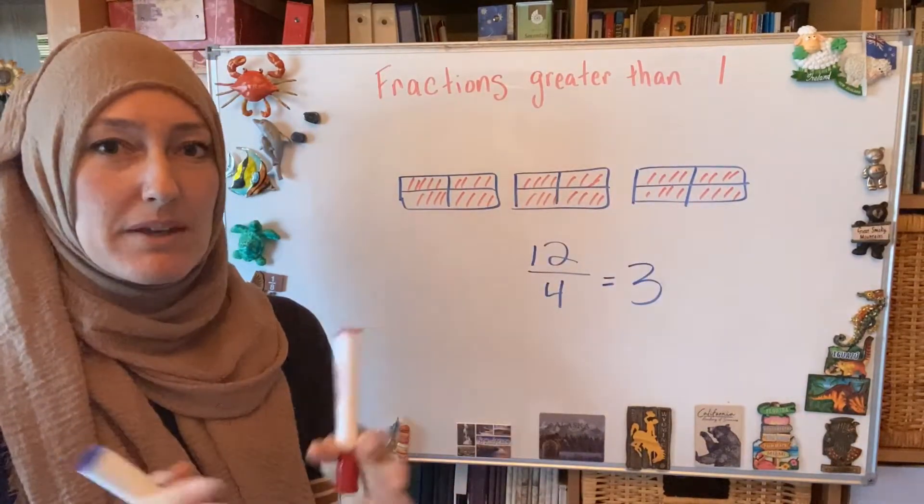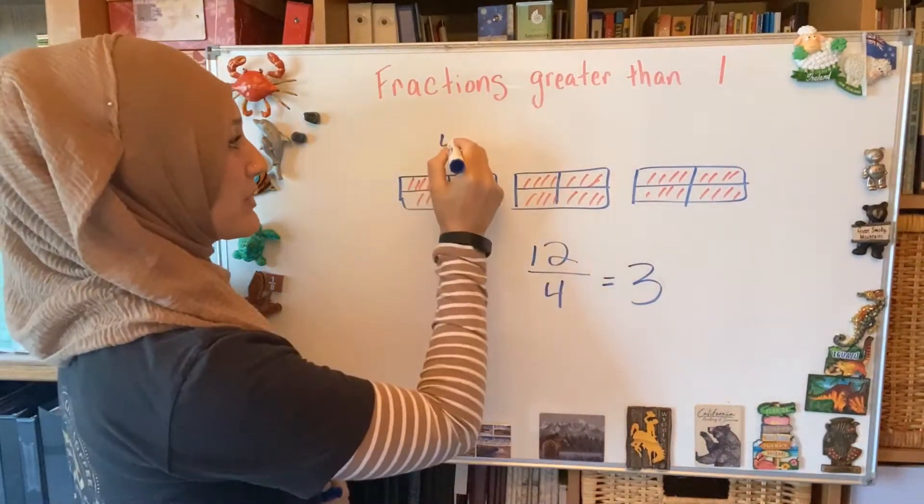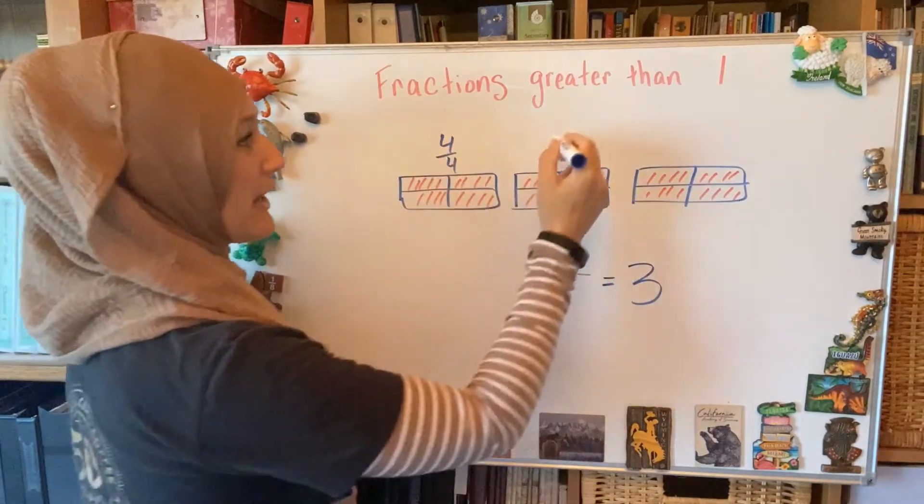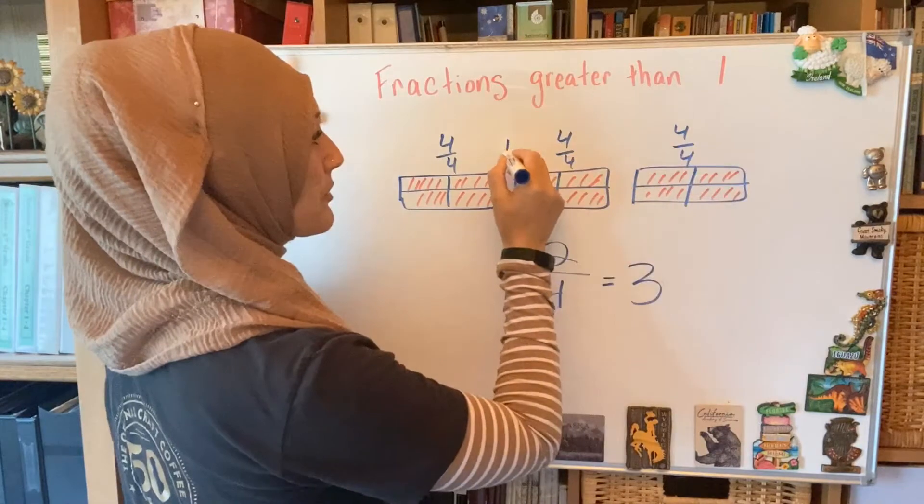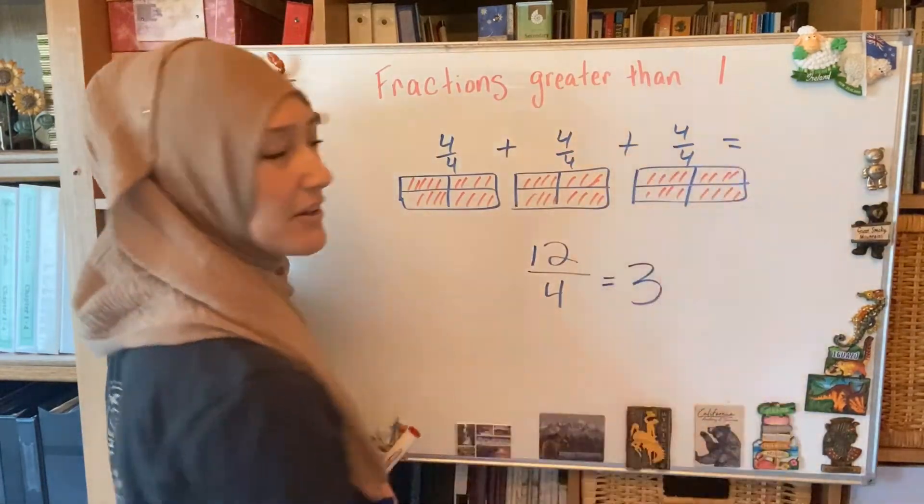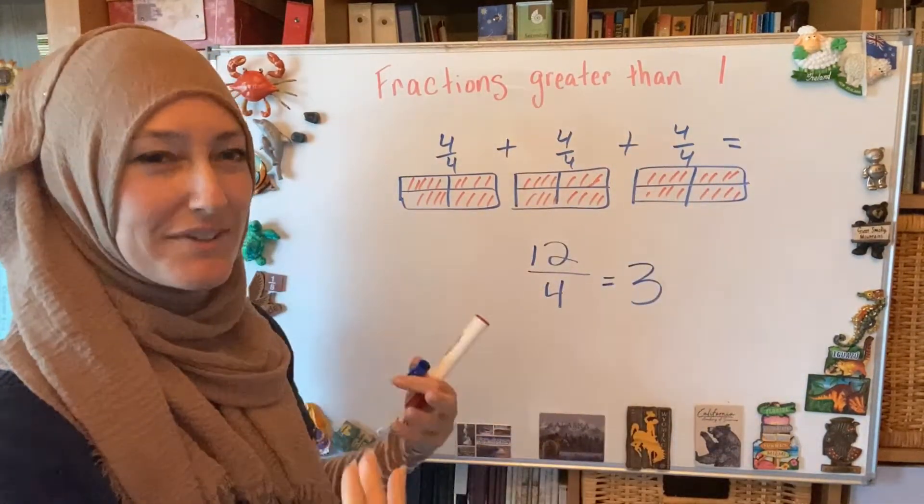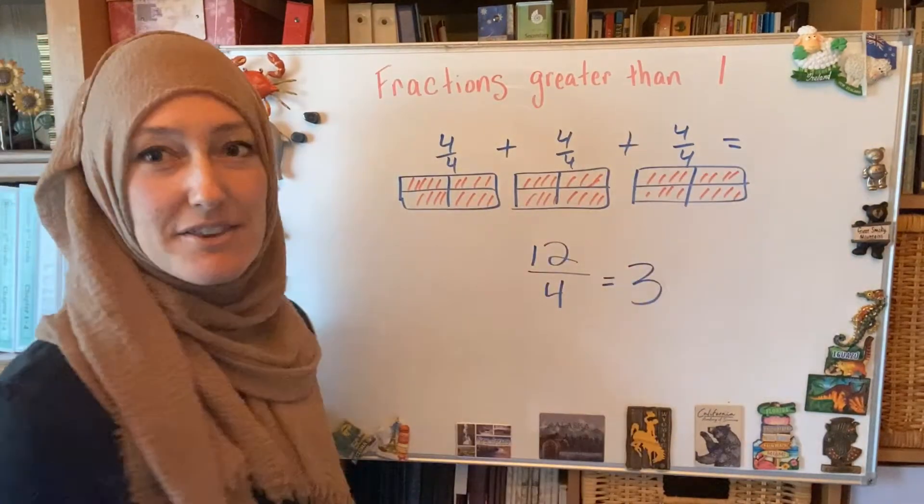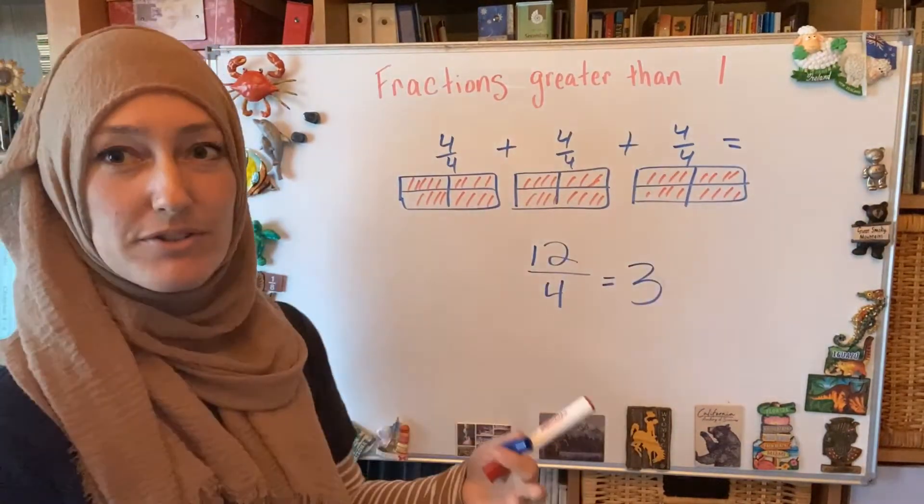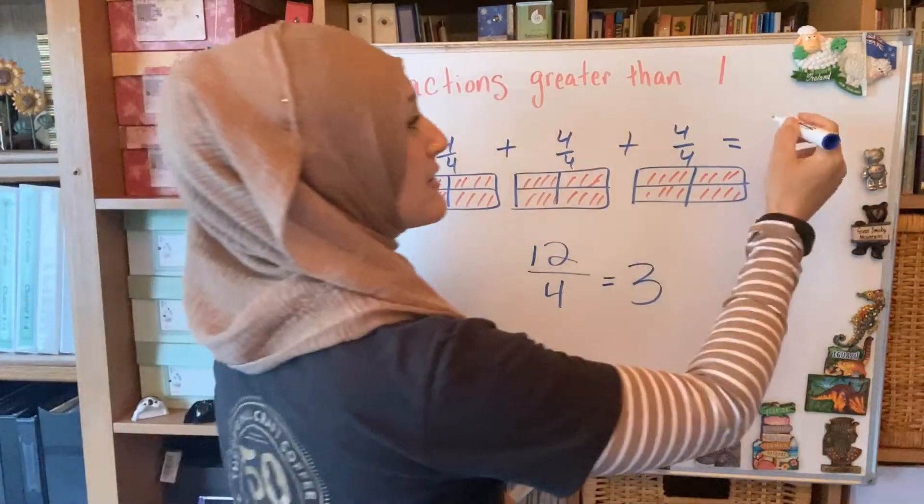Each one of them can be represented as a fraction. So this is four fourths, and another four fourths, and another four fourths. And what do we get if we add those all together? You can also see from previous lessons that if I add four fourths, and another, and another,